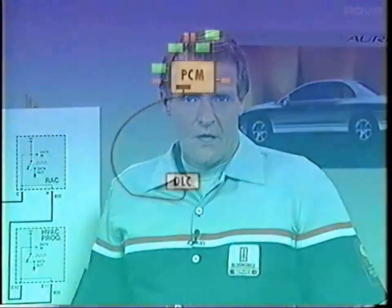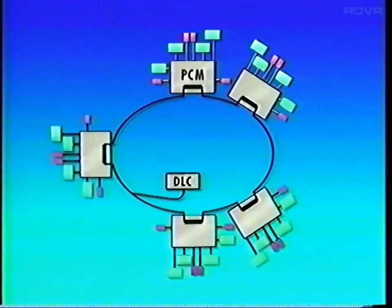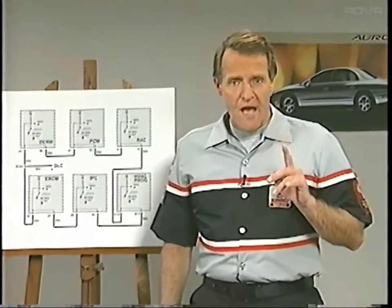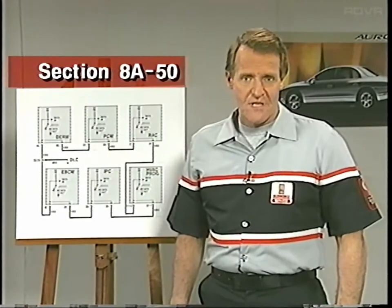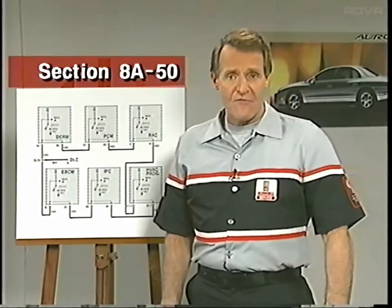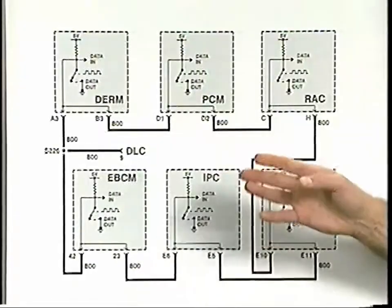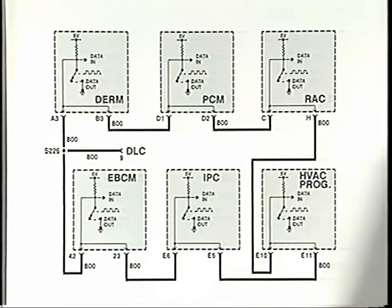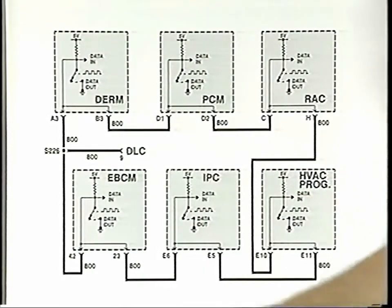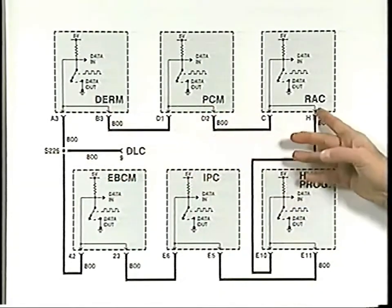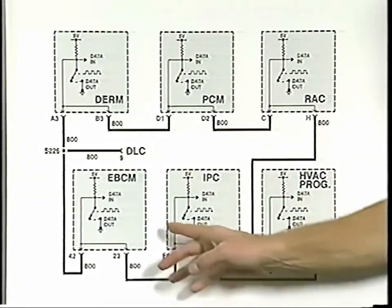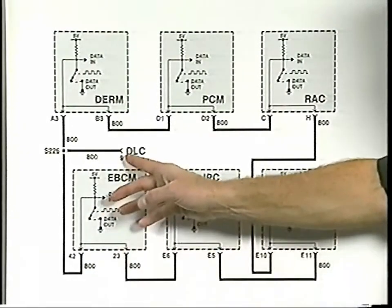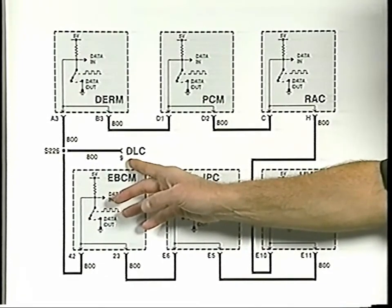First, the EWERT line, which began as a PCM to DLC diagnostic line but grew to include other modules as the bus route was extended. You'll find the EWERT schematic, and sometimes diagnostics, in Section 8A50 of most recent service manuals. This is the basic 88 and 98 EWERT schematic. It includes the airbag module, the DERM, the PCM, the RAC module, the HVAC programmer, the IP cluster, the anti-lock brake system module, and the data link connector. What's on the line can differ a lot from vehicle to vehicle.